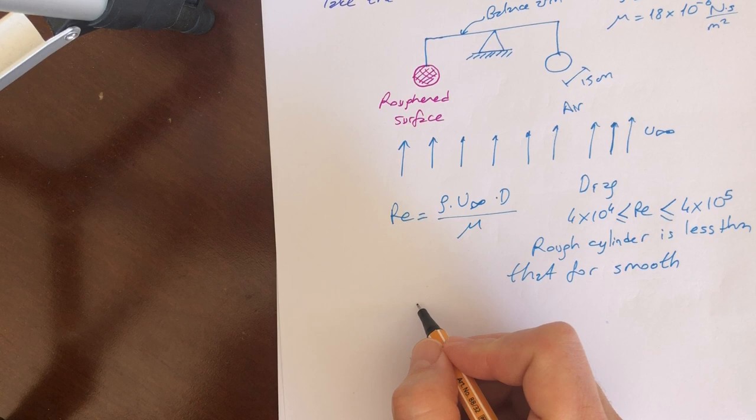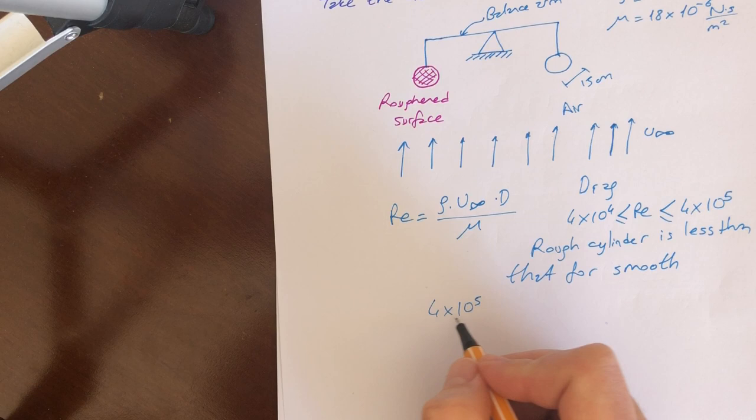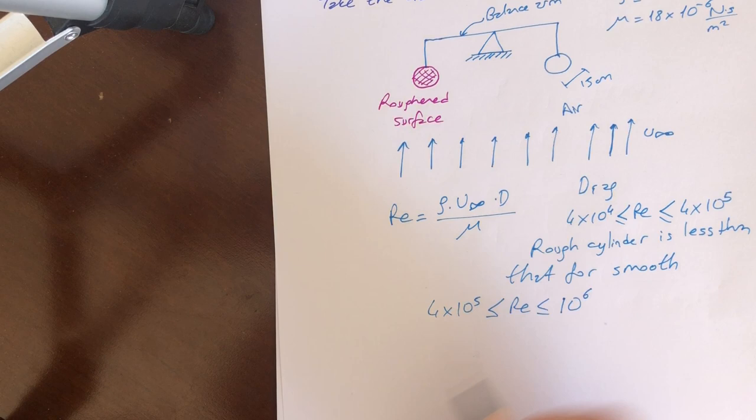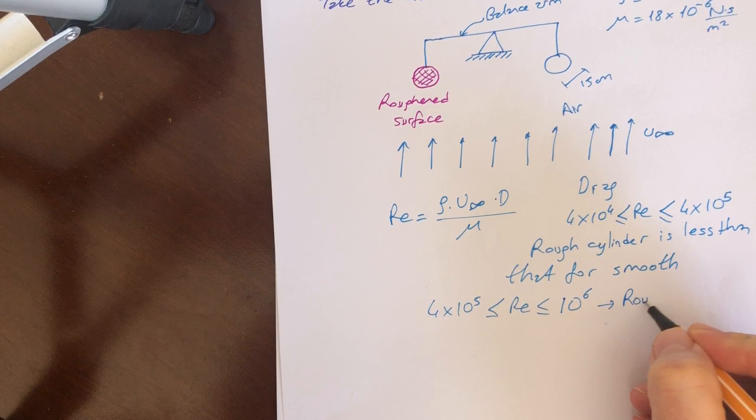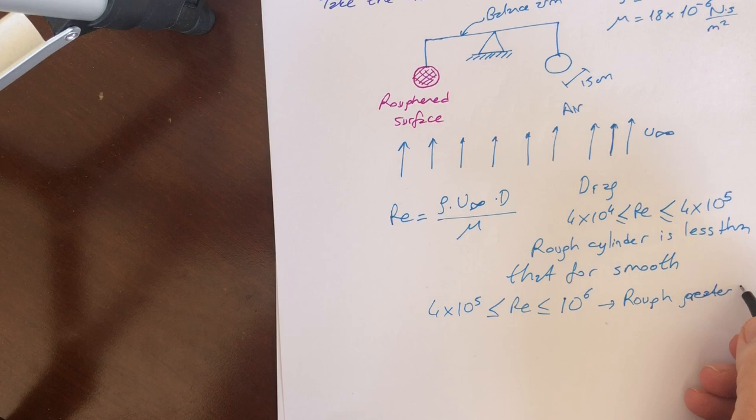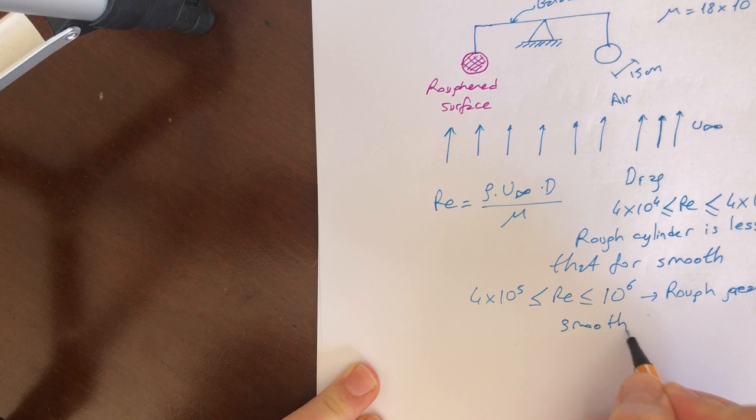Otherwise, if we choose the Reynolds number 4 by 10 to the 5 between 10 to the 6, in this case we have a vice versa situation, that rough cylinder or rough material greater than smooth one.